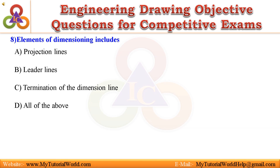Question 8. Elements of dimensioning include: A. Projection lines, B. Leader lines, C. Termination of the dimension line, D. All of the above. Answer is All of the above.